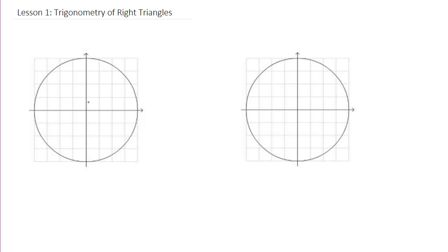Remember our unit circle. We've got a point on the unit circle, and I'm going to draw a line to that point — there's my radius. On my unit circle it has a radius of 1, and we end up with a point x and y. So if you remember from what we talked about before, sine and cos are just those coordinates.